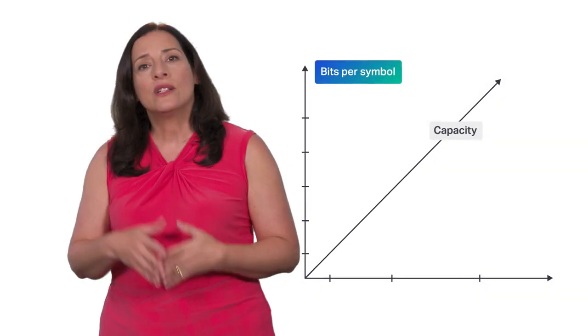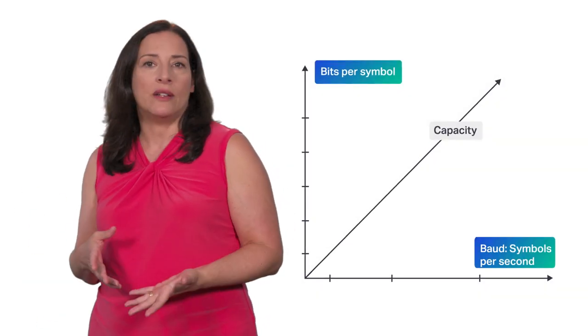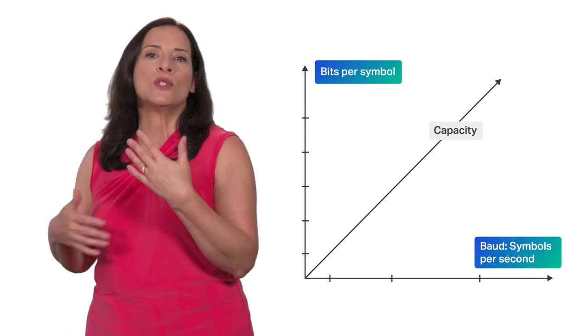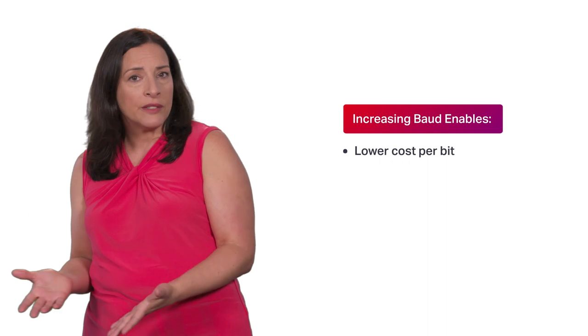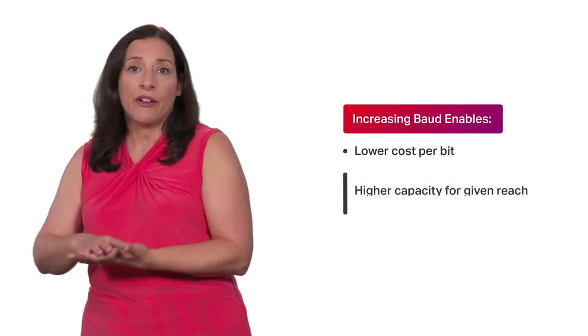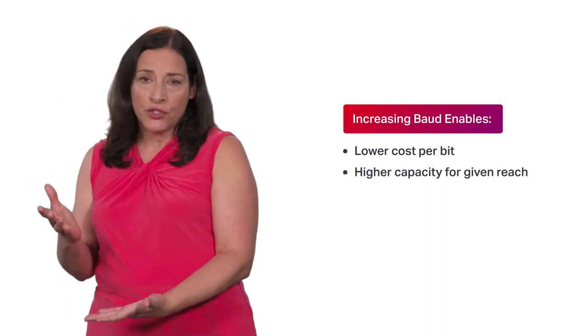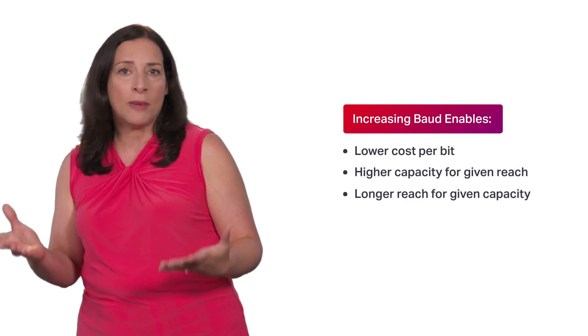The second way you can increase the capacity is increasing the baud, so you are processing more symbols per second. This is analogous to increasing the platform size on the truck, which allows you to carry more payload per truck. Increasing the baud allows the user to get better system performance out of a single coherent modem, which allows them to reduce the cost per bit. This means higher capacity per signal for a given reach or longer reach for a given capacity.